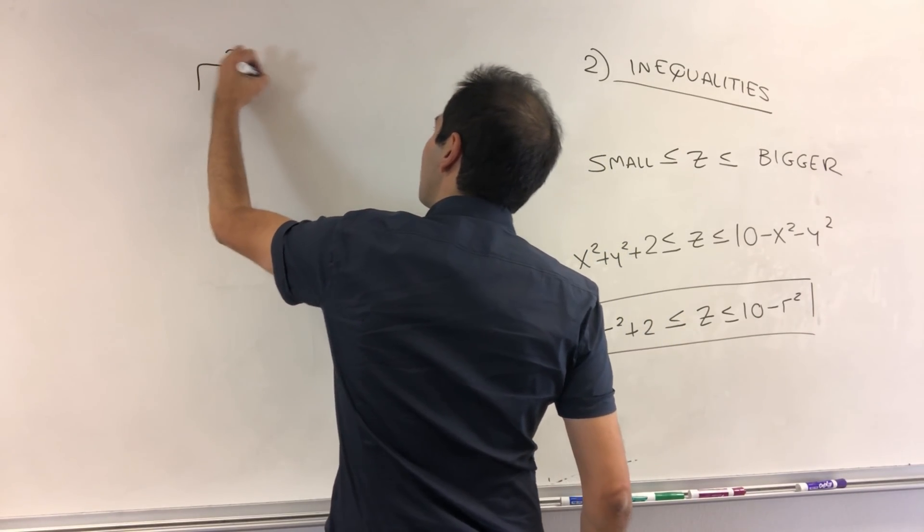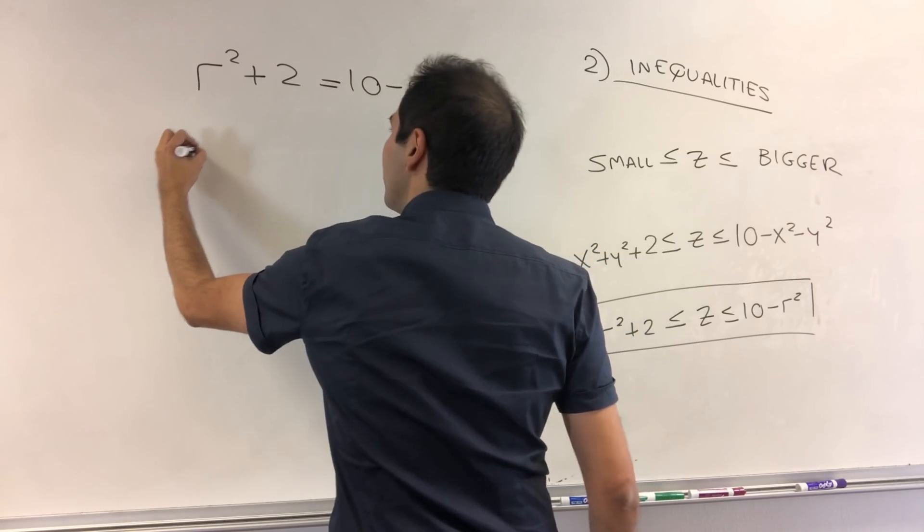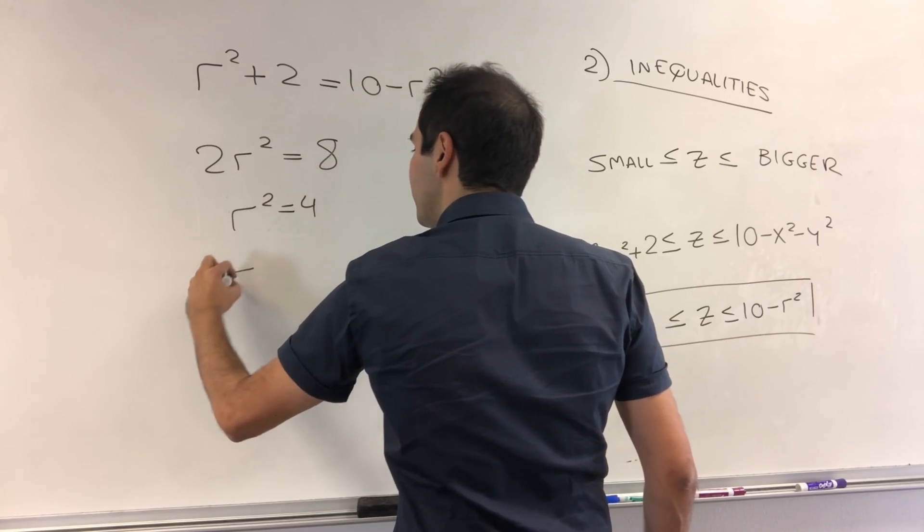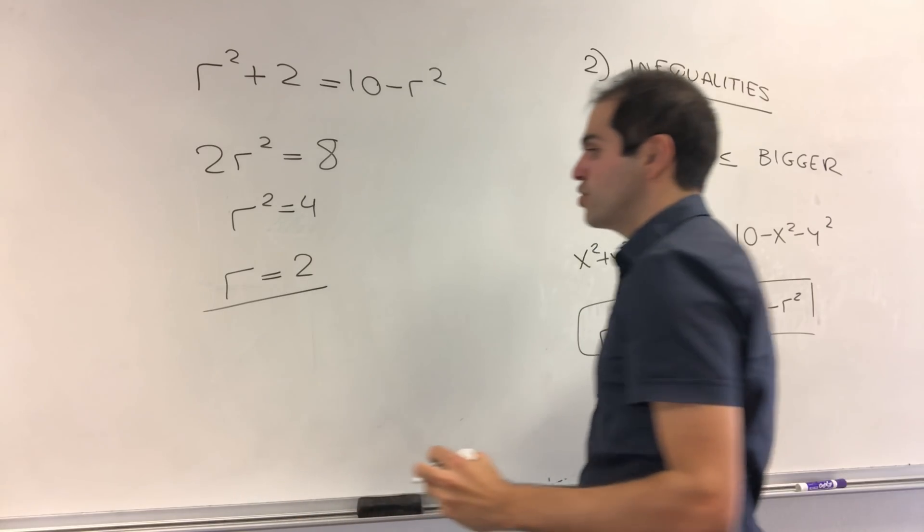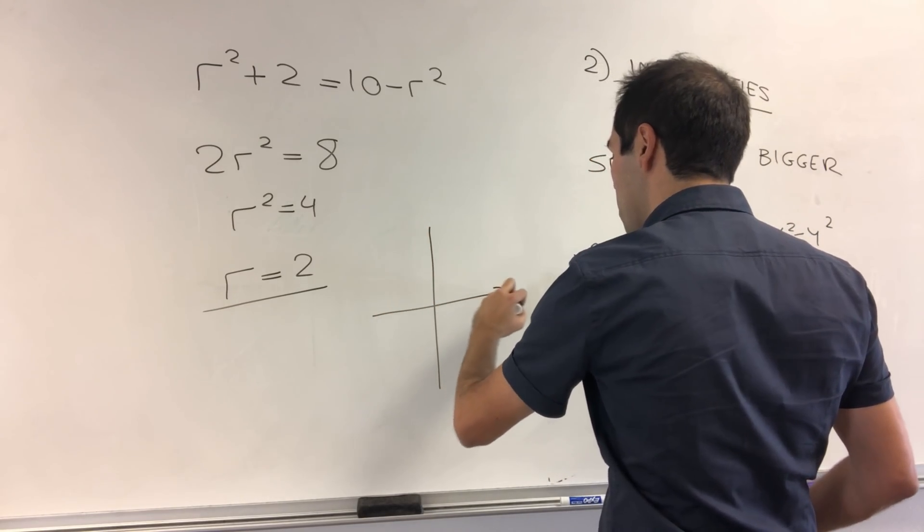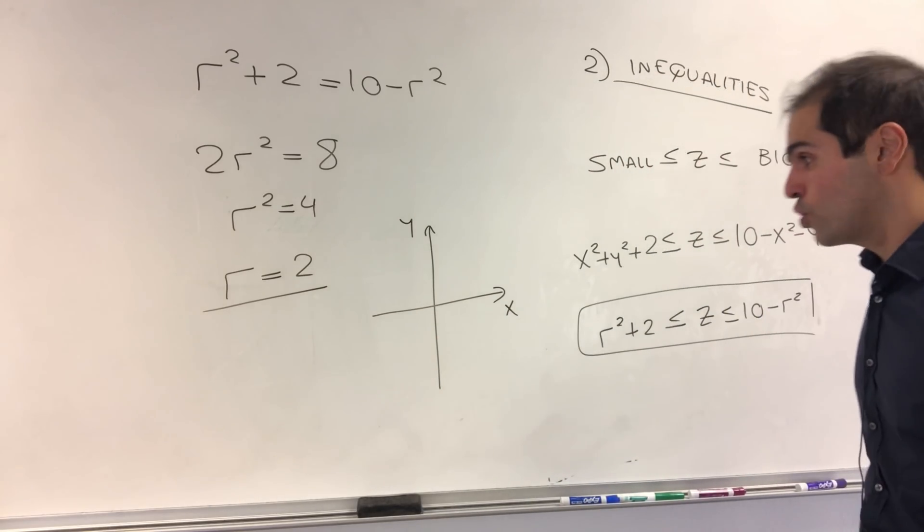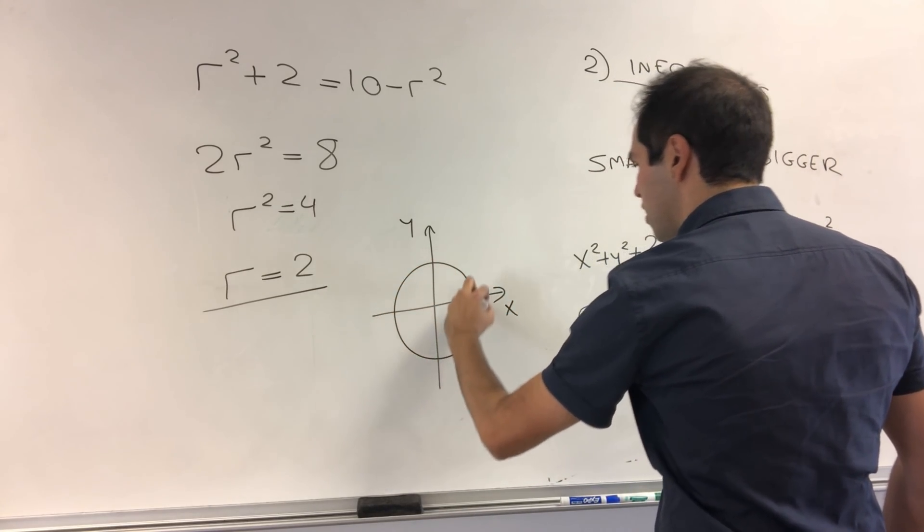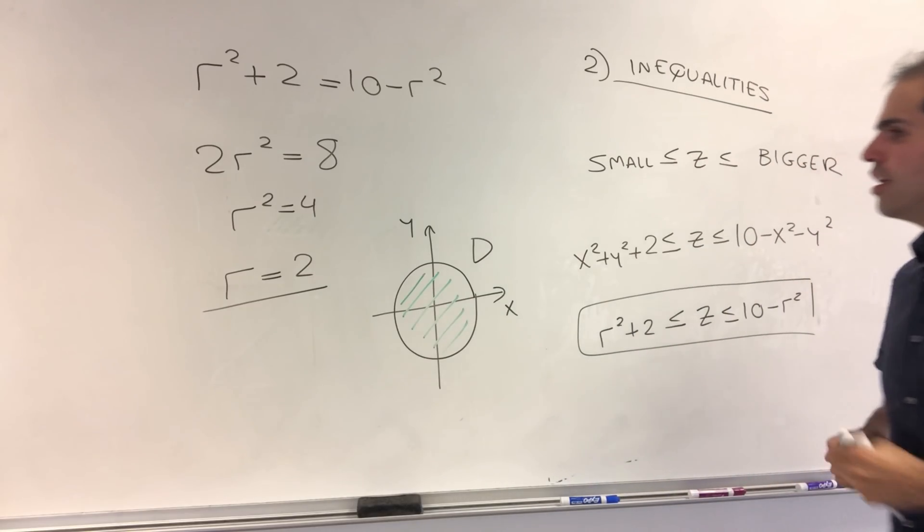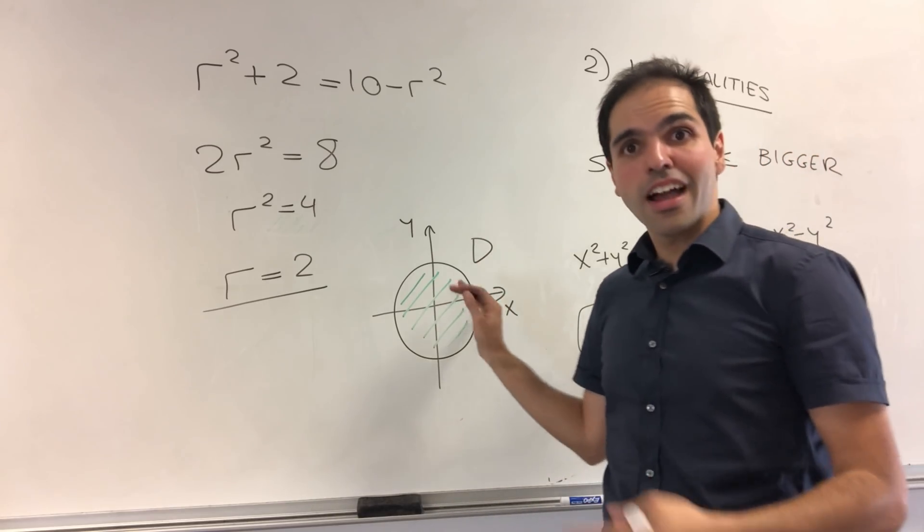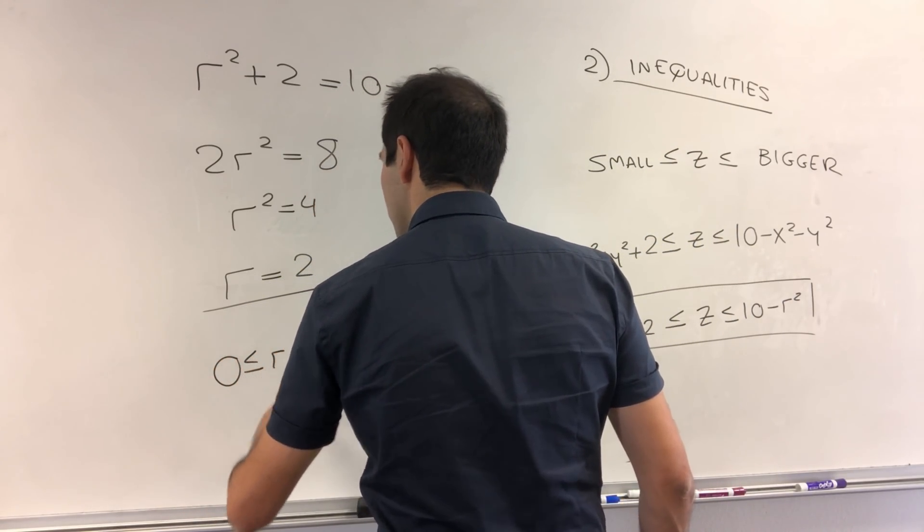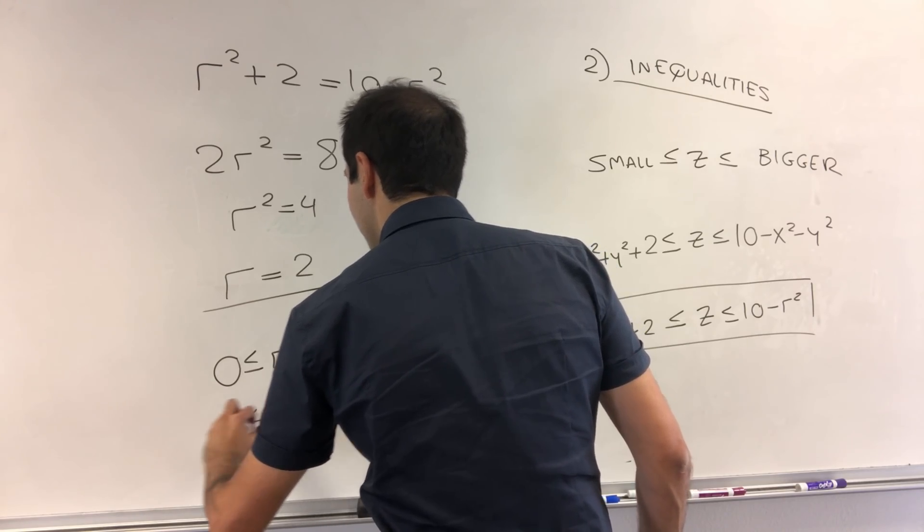All right, so r squared plus 2 equals 10 minus r squared. We can solve it. So 2r squared equals 8. So r squared equals 4. But here, the radius is positive. So r is 2. And so what does that tell you a region looks like in terms of x and y? It literally tells you that it's a circle of radius 2. So this is your region D here. And of course, in this case, it's nicer to write in polar or cylindrical coordinates. So what do we have? r is between 0 and 2. And then the angle theta is between 0 and 2 pi.